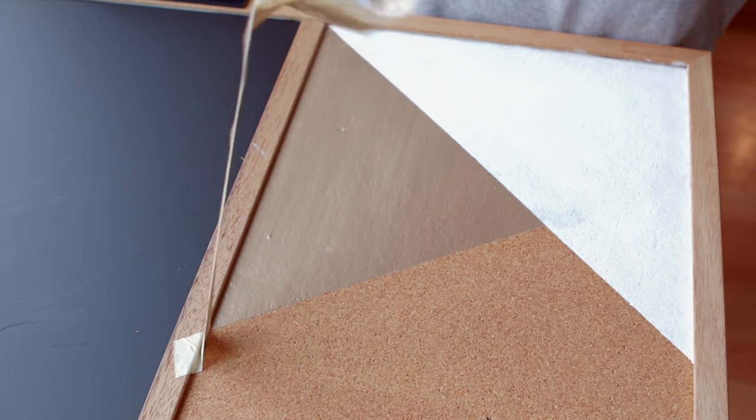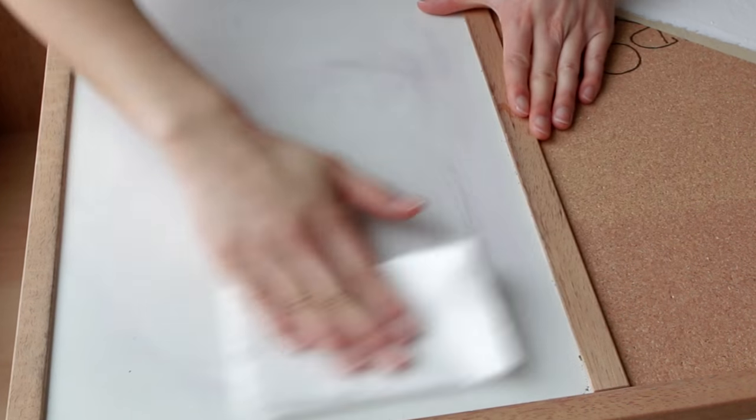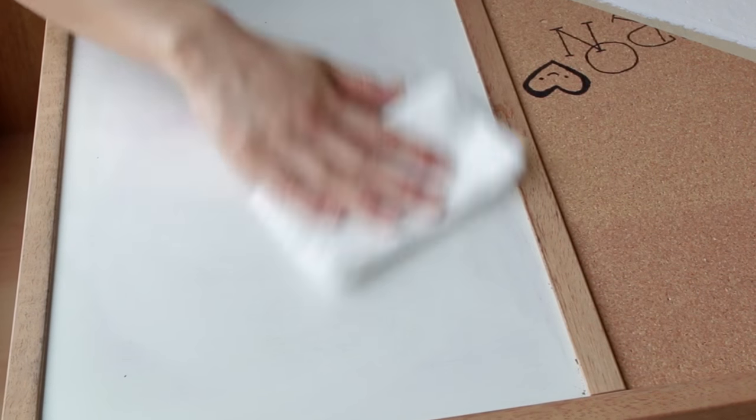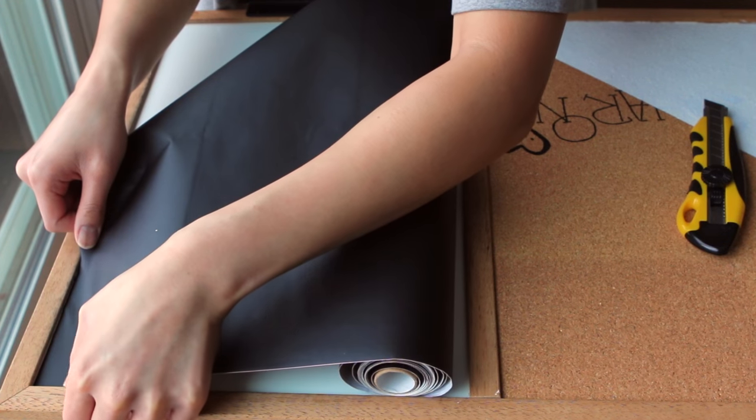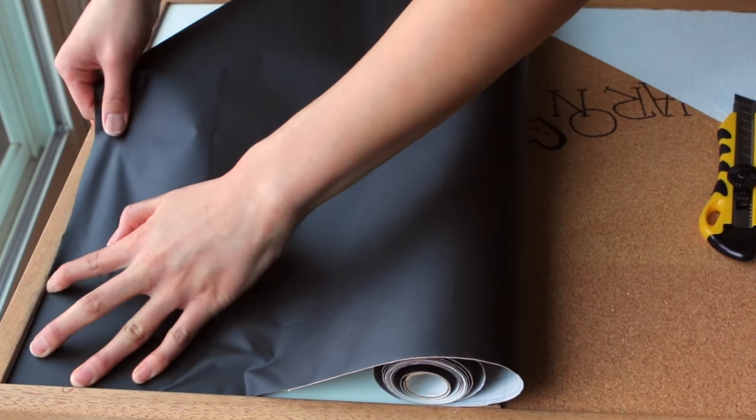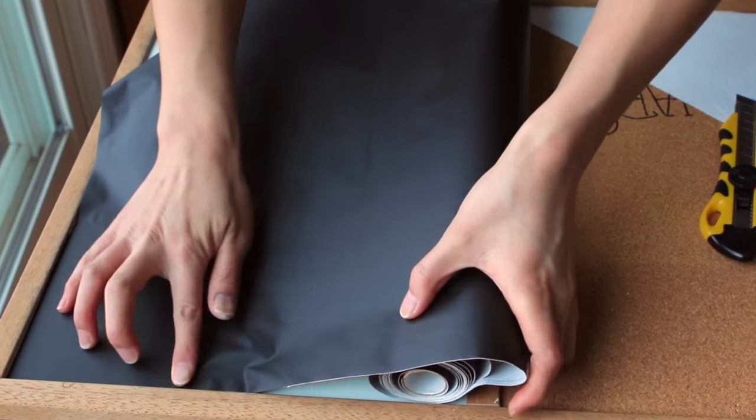So moving on to the chalkboard transformation. I'm starting out with my dirty old whiteboard here. I'm just cleaning everything off first with some rubbing alcohol so I don't have any residue left behind from the dry erase markers and making sure that my contact paper is going to stick on nice and bump-free when I apply it.